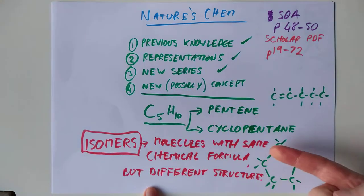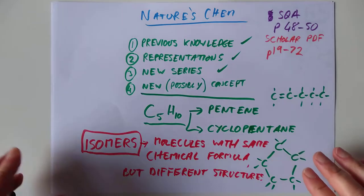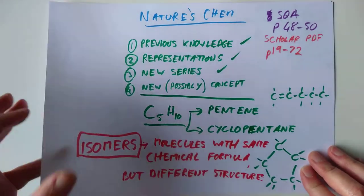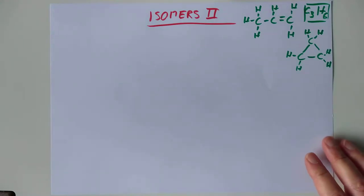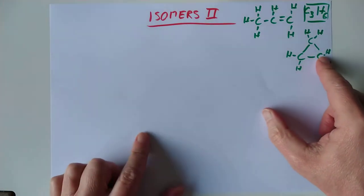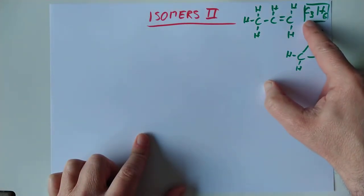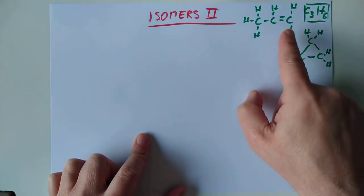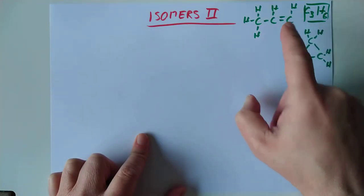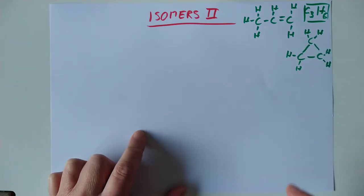In the last lesson, we finished with this concept of isomers. Isomers were molecules with the same chemical formula, but different structural formula or different structural shapes. We looked at, for example, C3H6, which can be either represented as propene or as cyclopropane.